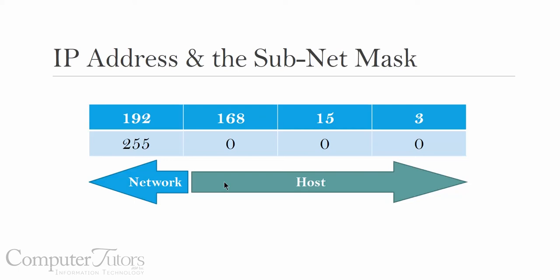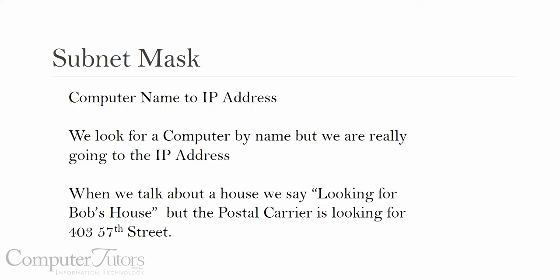The last example we talked about was 192.168.15.3 with a subnet mask of 255.0.0.0. Well, this lesson is going to explain even more about how the subnet mask works and tricks to help you find the network address and the host address. Most of us, when looking for something on the Internet, don't know the IP address we're going to. Instead, we use a computer name or something like Microsoft.com or ComputerTutorsUSA.com — but really, where we're going is a specific IP address.